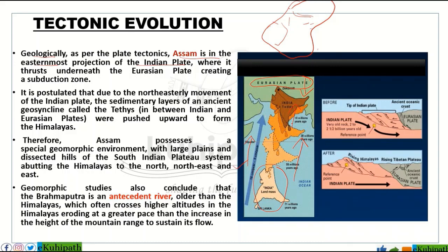This resulted in the present-day Indian landmass formation. Assam lies at the easternmost projection of the Indian plate. These are the major geomorphic features resulting from this tectonic evolution.